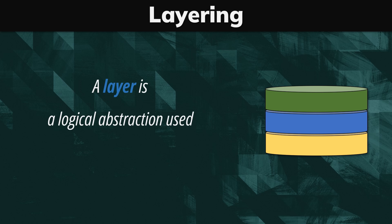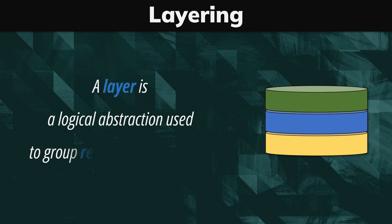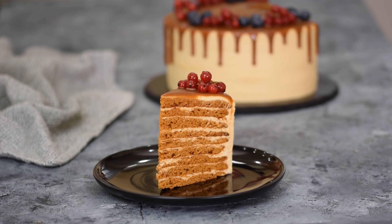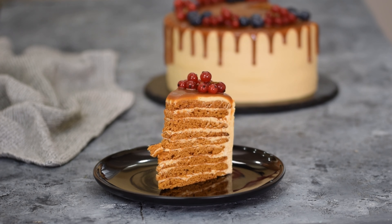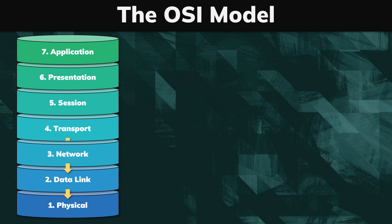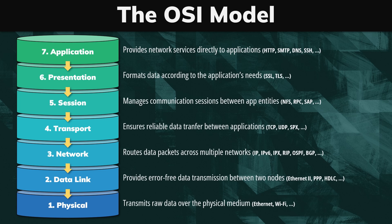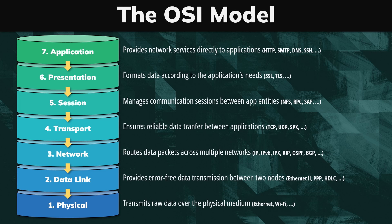We call them layers because usually we stack them on top of each other like a cake. A wonderful example of this approach is the OSI model that defines the seven layers used to communicate over a network. In this model, each layer leverages functionality implemented in the layer underneath.